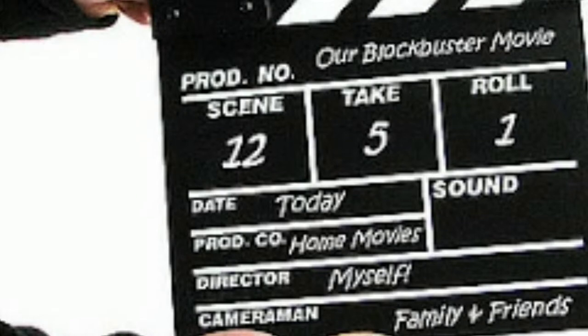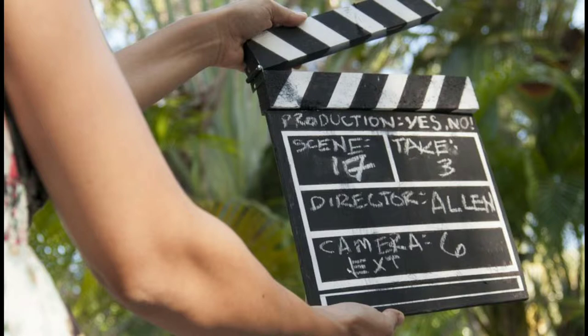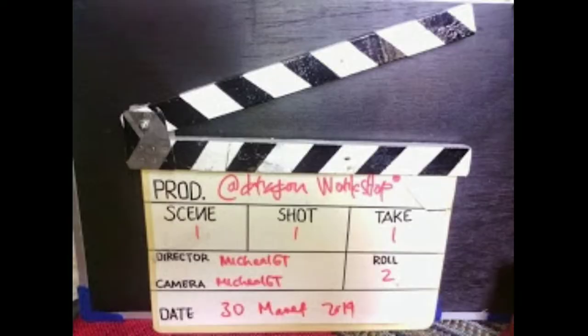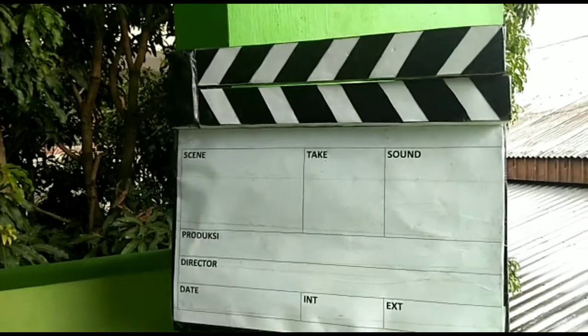Definition of clapperboard: A clapperboard is a device that is used to assist in synchronizing image and sound. In addition, the clapperboard is used to select and mark certain scenes and take recordings during production.